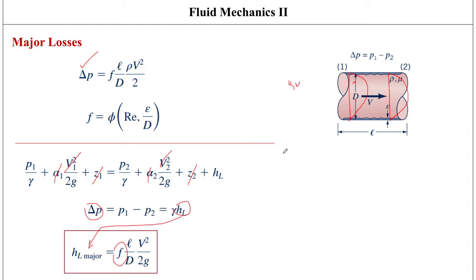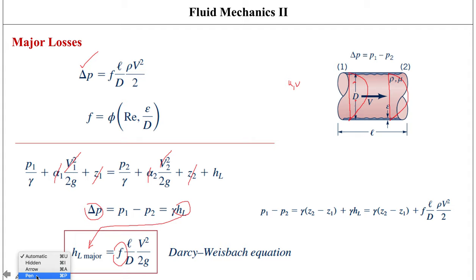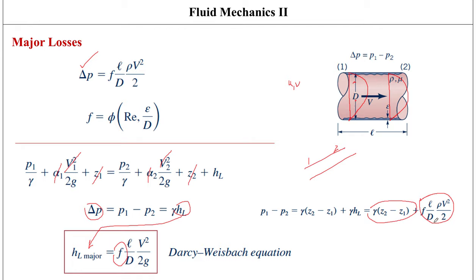This equation is called the Darcy-Weisbach equation — a very important equation that gives us the relationship between head loss and friction factor. For an inclined pipe, pressure changes occur due to both elevation change and frictional head loss, but the major head loss term itself does not change whether the pipe is horizontal or inclined.